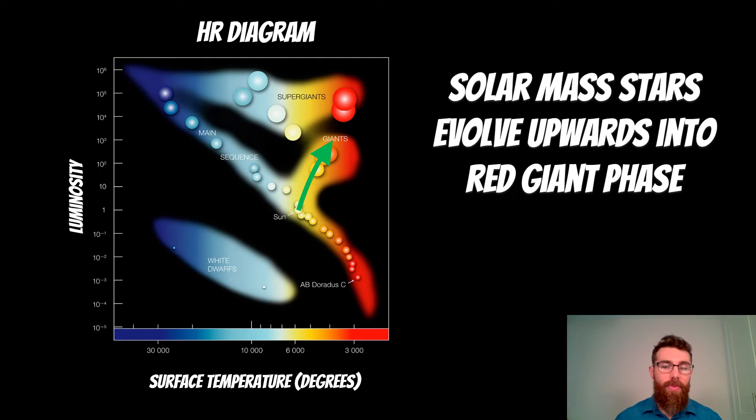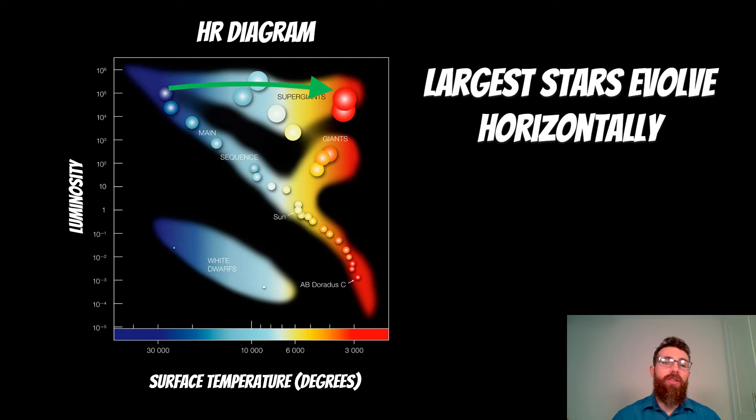So that's their evolutionary path and the very largest of stars, they actually move horizontally on the HR diagram. So they're already kind of at their peak luminosity, they can't get any more luminous than they already are, they're at that limit, the Eddington limit, so they would typically evolve horizontally into that red giant phase. Their surface temperature cools down but they don't get any more luminous.